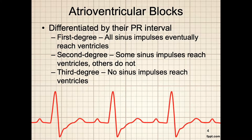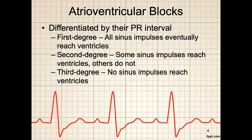In a first degree block, all impulses eventually reach the ventricles, but they are delayed. In second degree AV blocks, some sinus impulses reach the ventricles while others do not. In third degree AV block, no sinus impulses ever reach the ventricles.